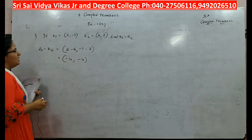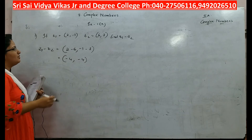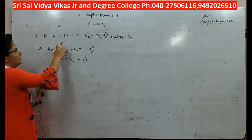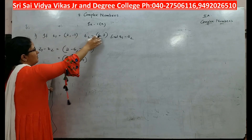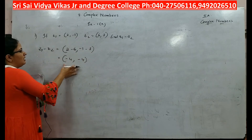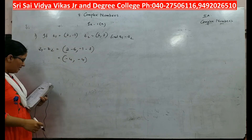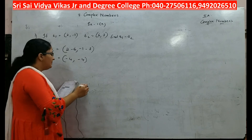So z1 minus z2 is (−4, −4). You are subtracting: (2−6) gives −4, and (−1−3) gives −4. This is how you subtract complex numbers, giving you (−4, −4). The next problem: if z1 is equal to (3, 5) and z2 is equal to (2, 6), find z1 times z2.